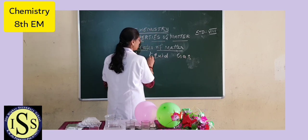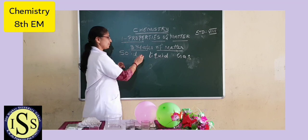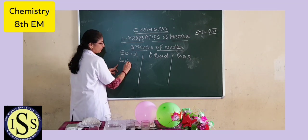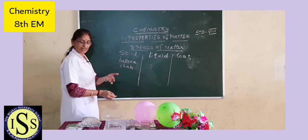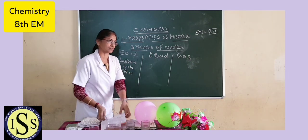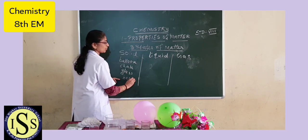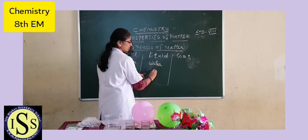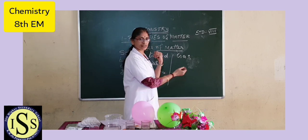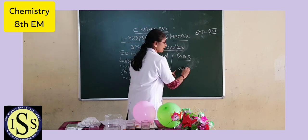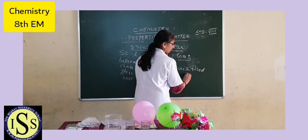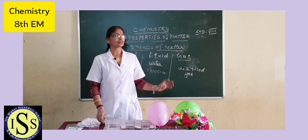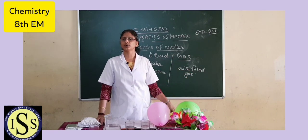Solid, liquid, and gas are the 3 physical states of matter. Now classify the objects in our surroundings — balloon, chalk, glass, book, desk — those are all solids. Water is a liquid, kerosene is a liquid. Air filled in a balloon is a gas. Then there are three physical states of matter: solid, liquid, and gas. Now let us go through the properties of matter.